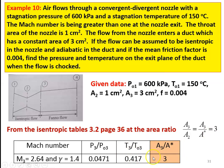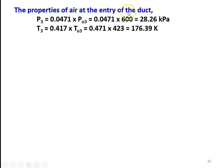For the known value A3 by A star equal to 3, we take properties Mach number, P3 by PO3, T3 by TO3 for gamma equal to 1.4 at the supersonic condition, because the Mach number is greater than 1 at the nozzle exit. So M3 equal to 2.64, P3 by PO3 equal to 0.0471, T3 by TO3 equal to 0.417. Properties at entry to the duct: P3 equal to 0.0471 into 600, equal to 28.26 kPa. T3 equal to 0.417 into 423, equal to 176.39 Kelvin.